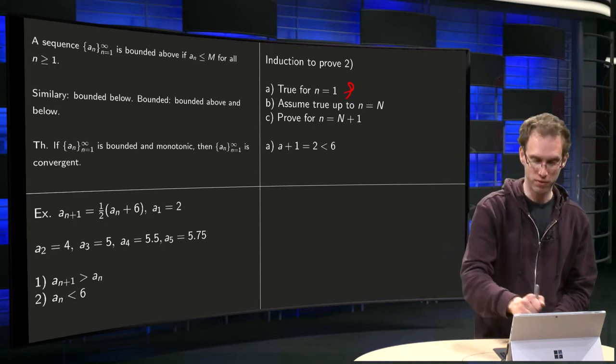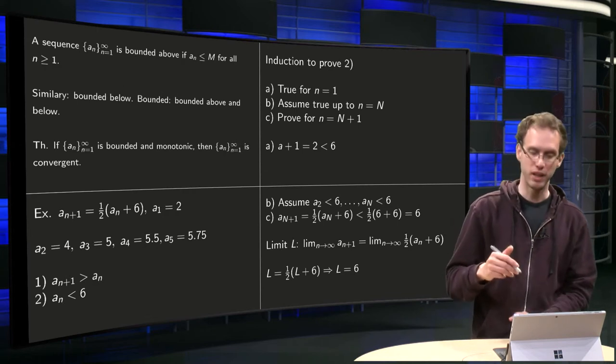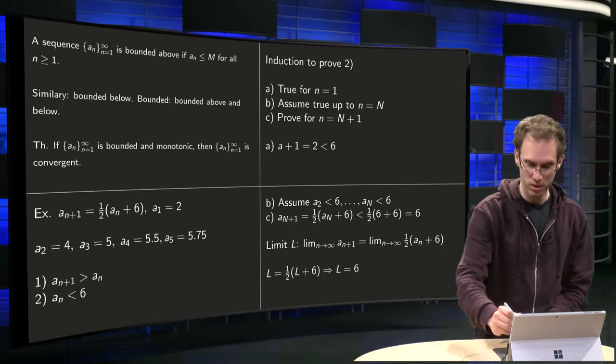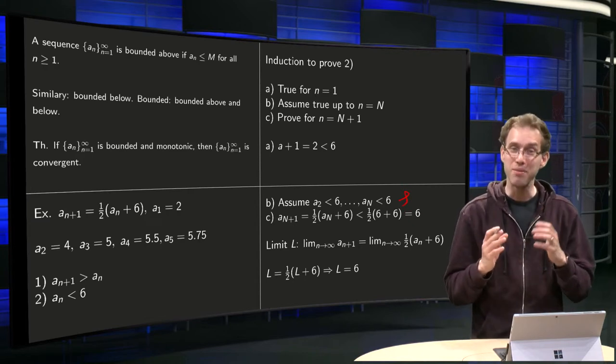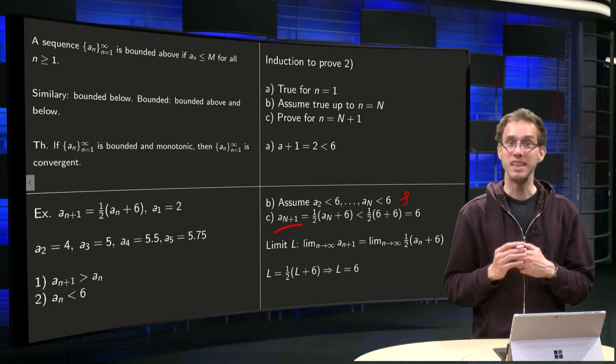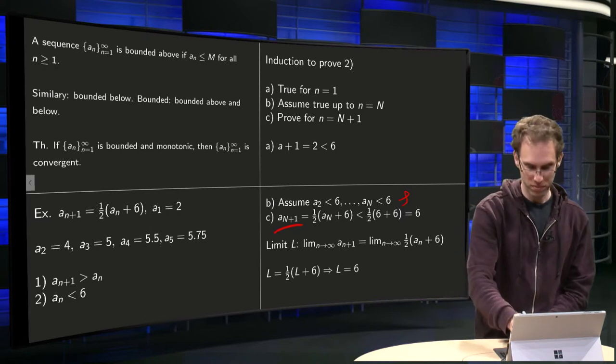So a, that's obvious. Then b, we assume that this is true for a2, a3, a4, a5 up till an. And we assume that those are all smaller than 6. And then we have to prove something about an+1. But an+1 = 1/2(an + 6) by definition.